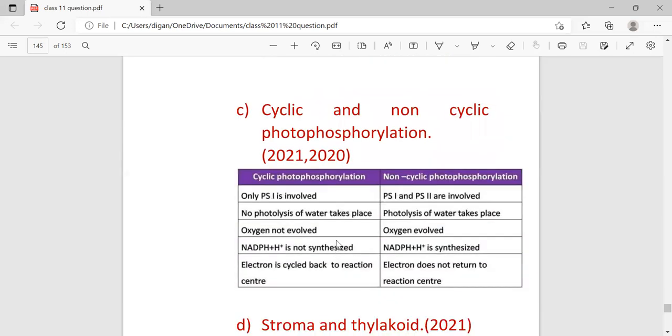Cyclic and non-cyclic photophosphorylation, which is part of light reaction. Continuously coming in 2021 and 2022. In cyclic photophosphorylation, only photosystem 1 is involved. In non-cyclic, both photosystem 1 and 2 are involved. No photolysis of water takes place in cyclic; photolysis takes place in non-cyclic. Oxygen is not evolved in cyclic; oxygen evolves in non-cyclic. NADPH plus H positive is not synthesized in cyclic, whereas it is synthesized in non-cyclic. Electron is cycled back to the reaction center in cyclic, whereas in non-cyclic, electron does not return back to the reaction center.